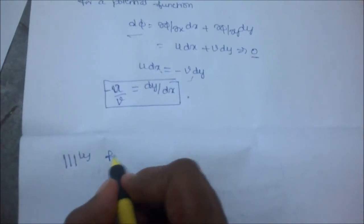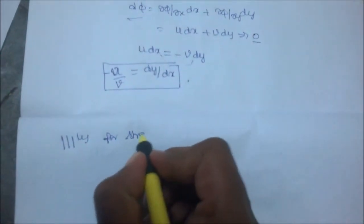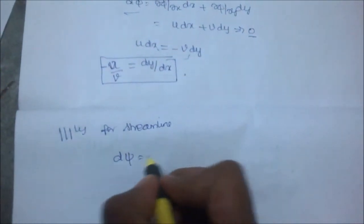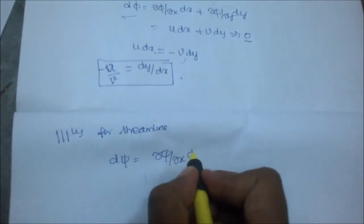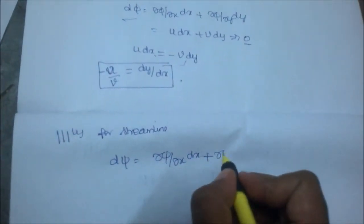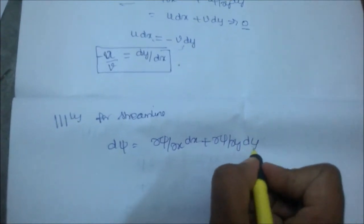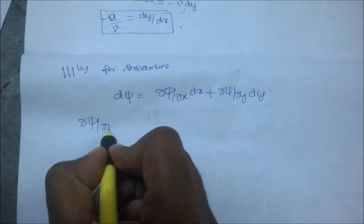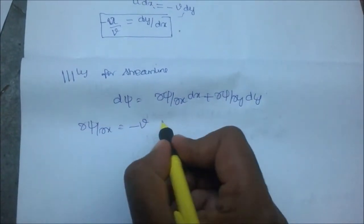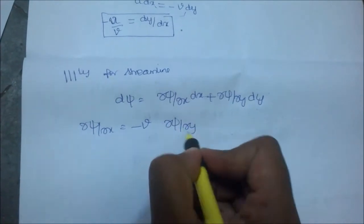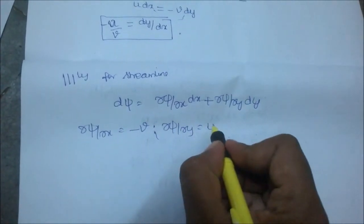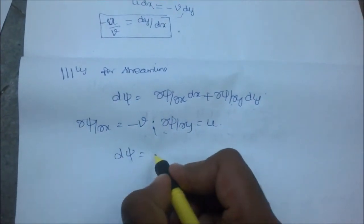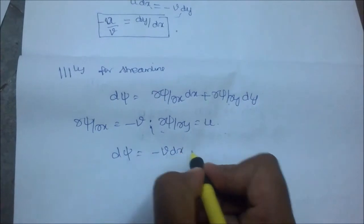Similarly, for the streamline, dψ equals ∂ψ/∂x dx plus ∂ψ/∂y dy. ∂ψ/∂x equals minus v, and ∂ψ/∂y equals u. Substituting them in this equation, dψ equals minus v dx plus u dy.